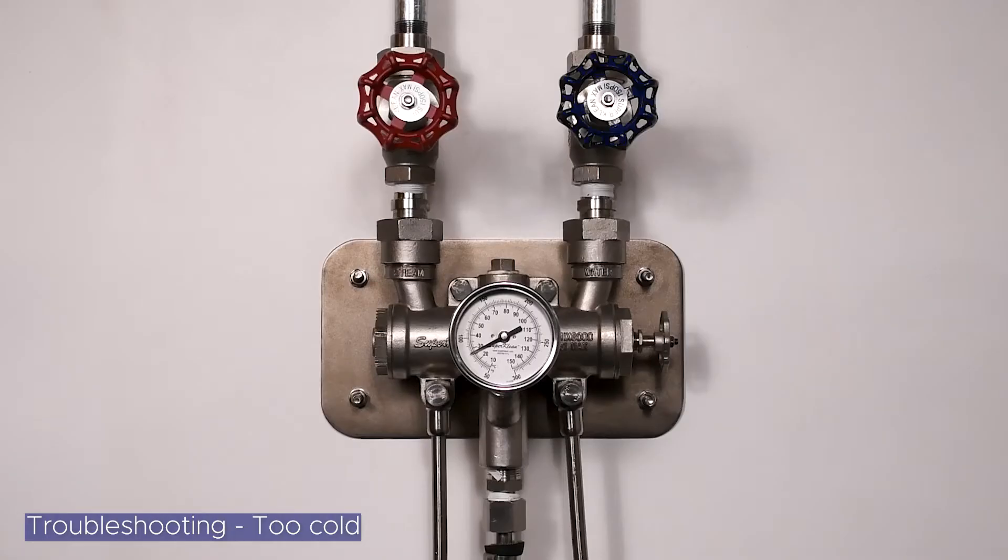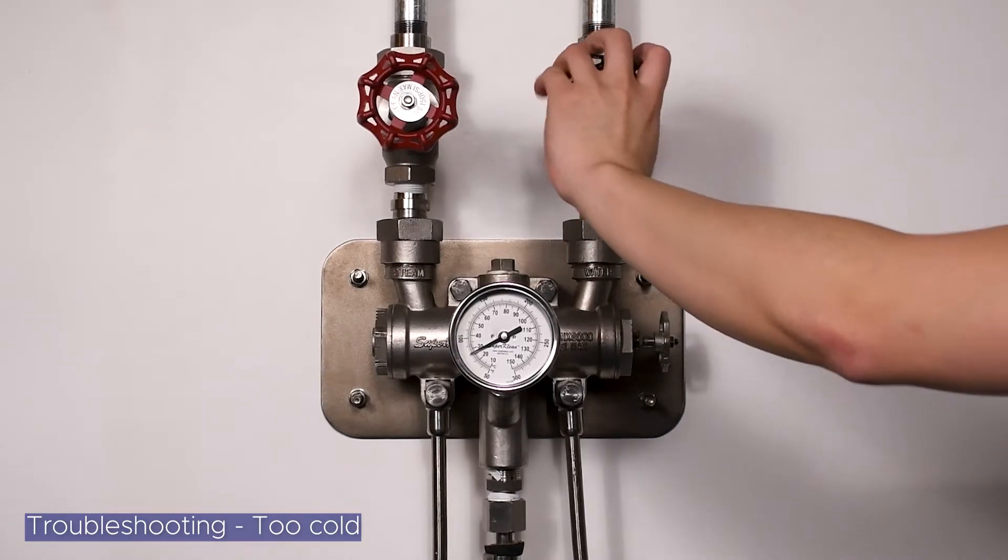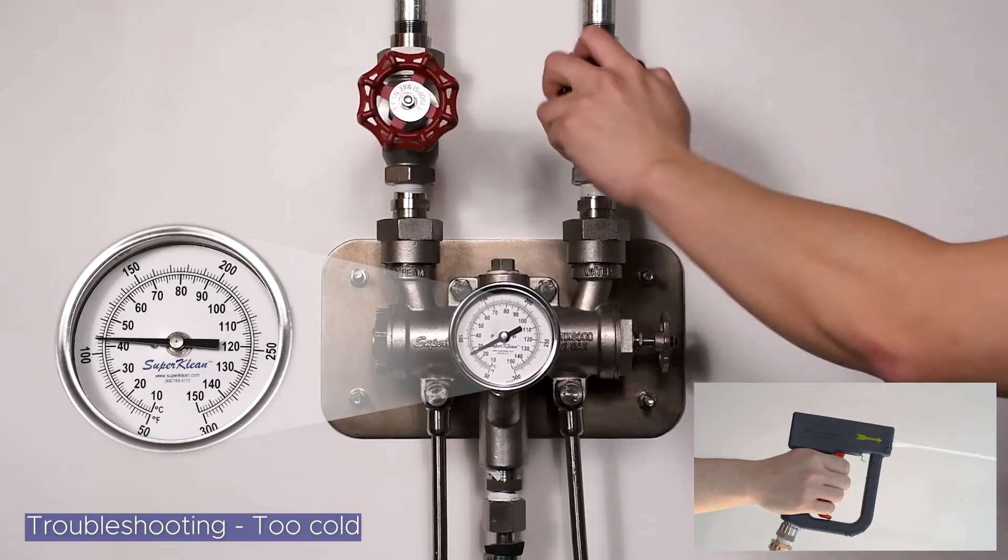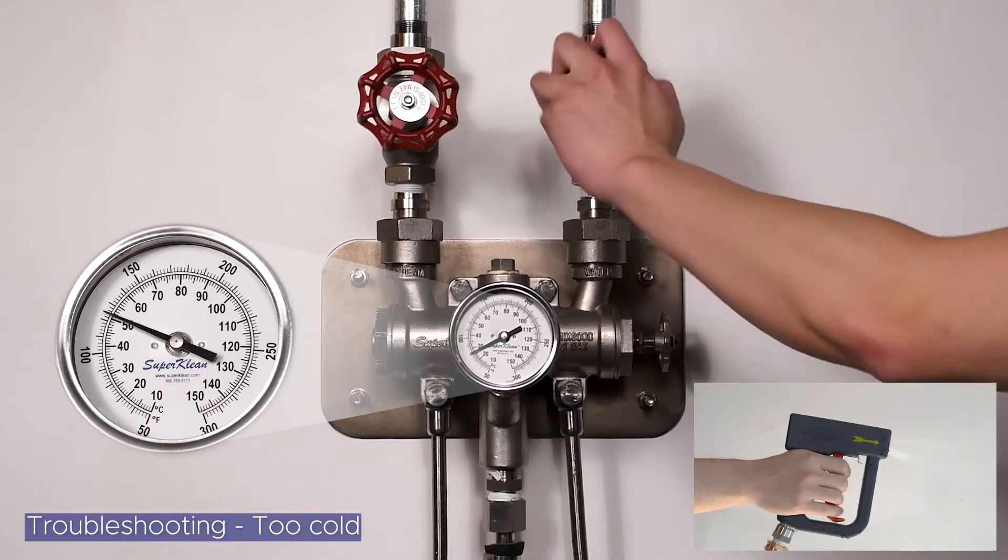In the case that the temperature output is still too cold after fully turning the temperature adjustment hand wheel clockwise, begin to decrease the cold water flow by closing the cold water globe valve by slowly turning it clockwise while spraying the nozzle. Continue turning until the temperature output stabilizes at your desired temperature.